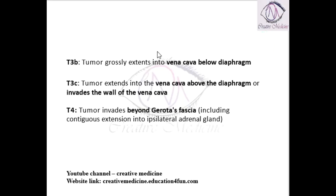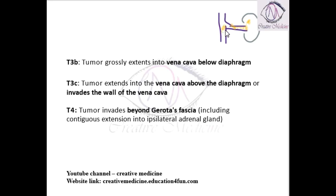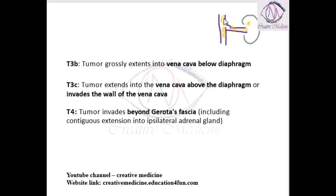Then we have T3b. In T3b, the tumor extends from the kidney into the renal vein, and from there it goes into the vena cava below the diaphragm. If it extends into the vena cava, then it is T3b.